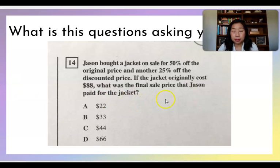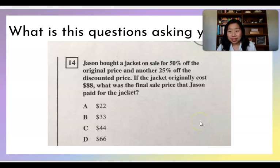Next example. Jason bought a jacket on sale for 50% off the original price and another 25% off the discounted price. If the jacket originally costs $88, what was the final sale price that Jason paid for the jacket? What do we think the keyword here is? Final sale price. So this is like a multi-step problem. This is going to take a little while to kind of go through with your class.